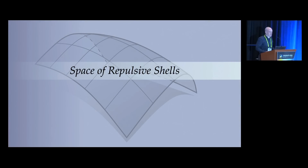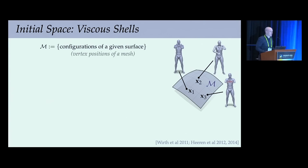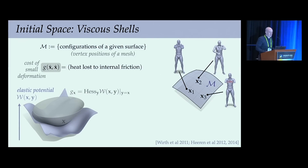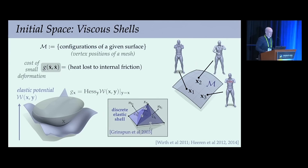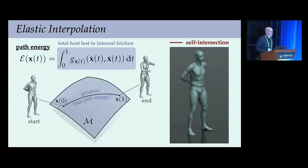We begin with a space M of so-called viscous shells, where each point is a shape configuration encoded by vertex positions of a mesh. If we think of the surface as an elastic body, we define the cost of a small deformation as the heat lost to internal friction. More explicitly, the Riemannian metric G is the Hessian of some elastic potential W. We use a discrete elastic shell model, though a volumetric model could be used instead. To interpolate between two shapes, we minimize the path energy—the total heat lost to internal friction over a motion—but a purely elastic model does nothing to prevent self-intersections.